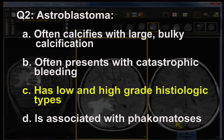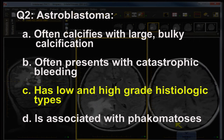Oligodendroglioma has a much higher incidence of calcification than astroblastoma. Astroblastoma does not often present with bleeding catastrophically — in fact, it doesn't really bleed that often at all. Phacomatosis may be associated with schwannoma (NF2), ependymoma (NF2), meningioma (NF2), neurofibromas (NF1), and giant cell astrocytoma in tuberous sclerosis or Bourneville-Pringle syndrome — but not astroblastoma. So D is false, and the correct answer by process of elimination is C.